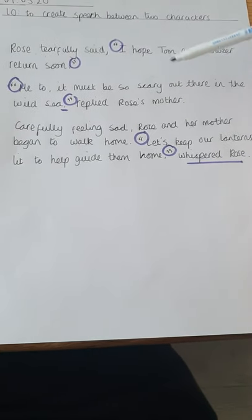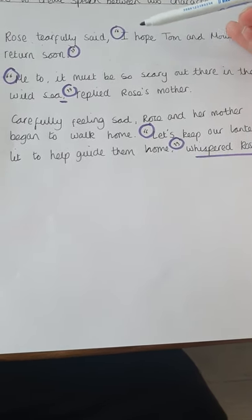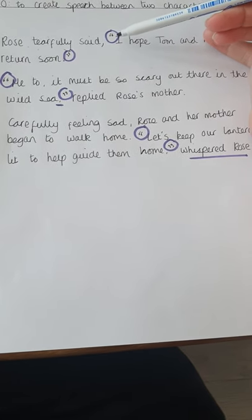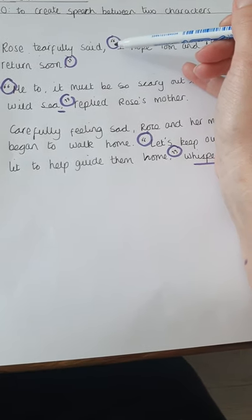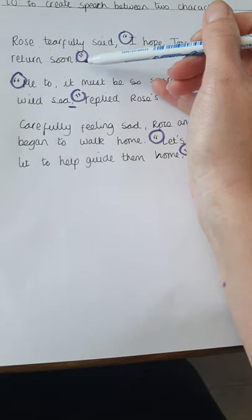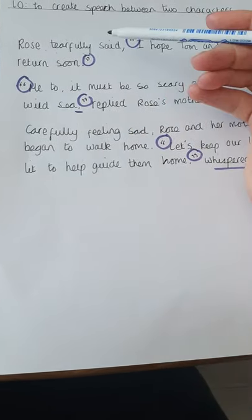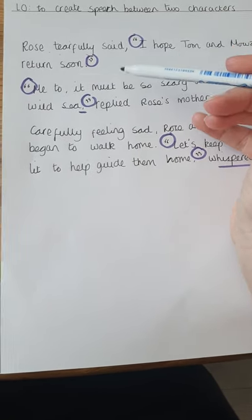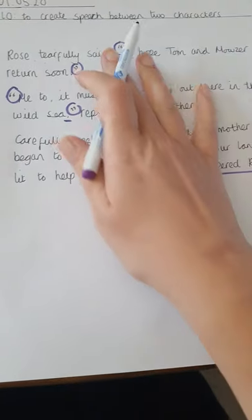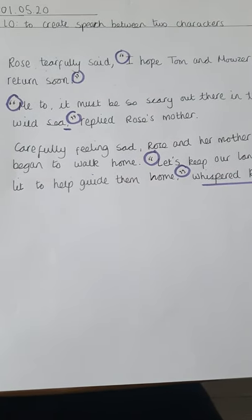So you're going to create some speech today and you've got to follow these important steps. Remember to use inverted commas to punctuate only what is being said — open the speech with an inverted comma and close it with an inverted comma. Put who and how they have said it. Do a new line for a new speaker. And always start speech with a capital letter. Good luck today and I look forward to seeing examples of your speech.